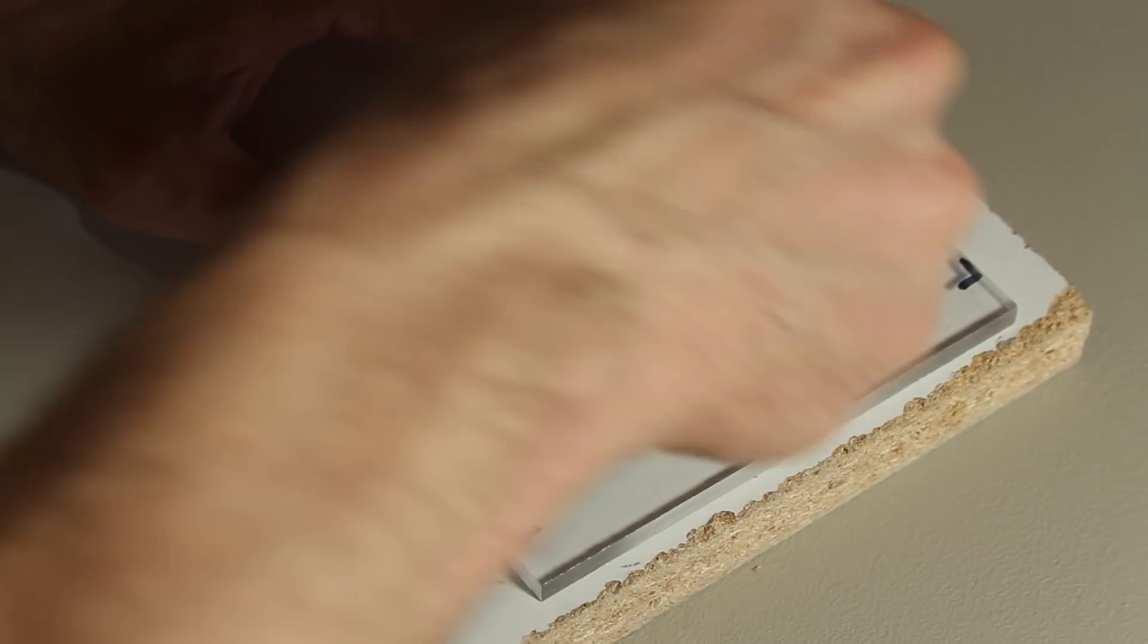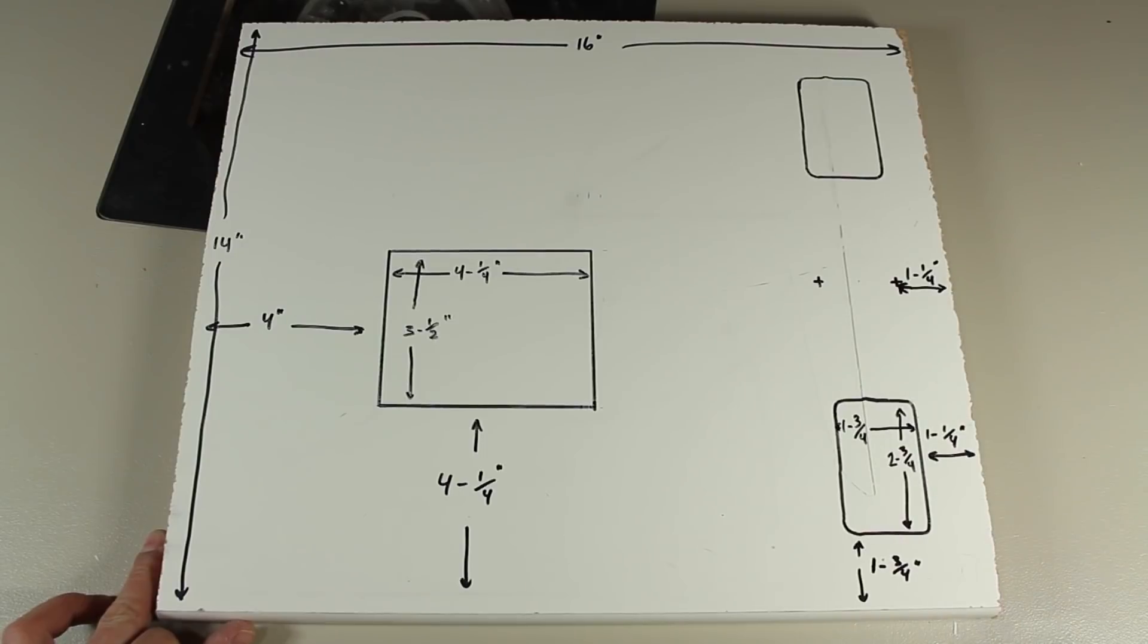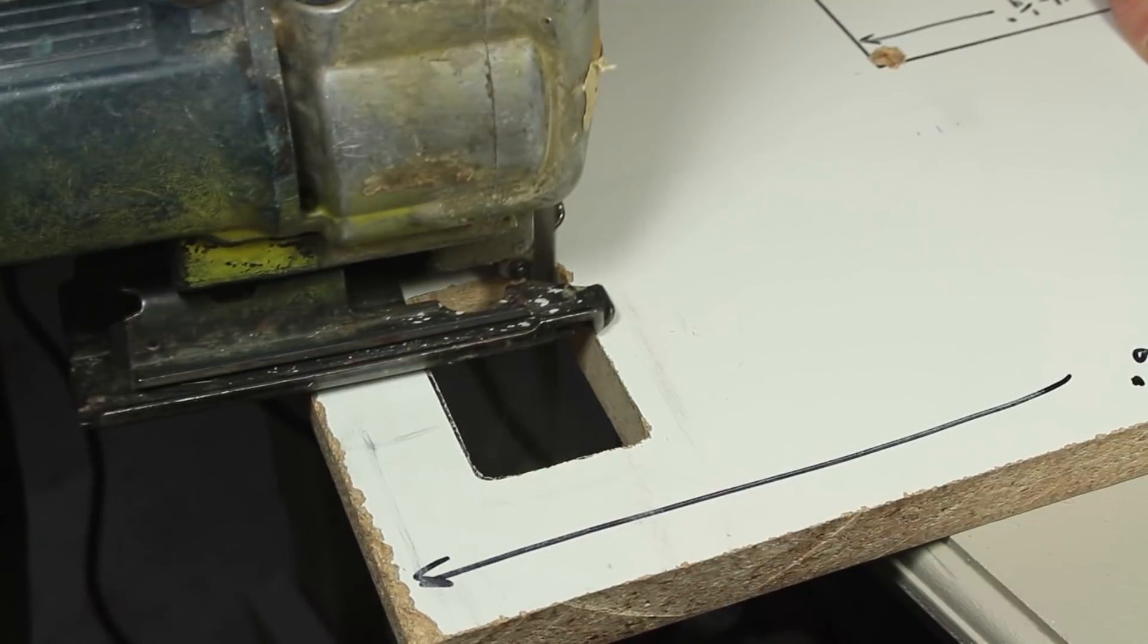I made this plastic template for marking holes for where the switch and outlet will go, and a few other markings based on these measurements. To cut the holes out, let's drill the corners first, then use a jigsaw to cut the sides.